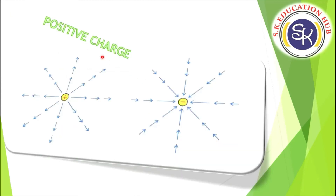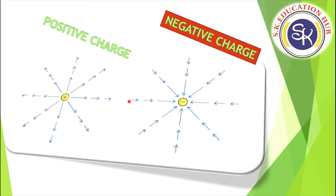We mainly have two charges: positive and negative. The electric field lines for positive charge go outward — you can see the arrows going outward from +Q. For negative charge, the field lines come inward. Also notice that near the charge the lines are denser, and as you go further away the density decreases. This means the electric field is stronger near the charge and weaker as you move farther away.